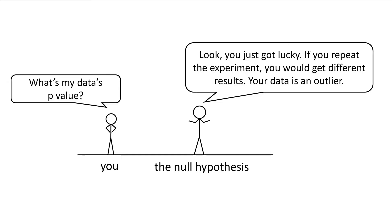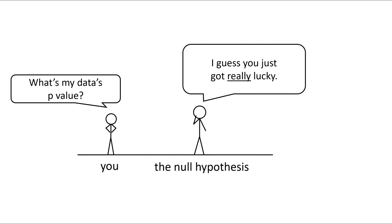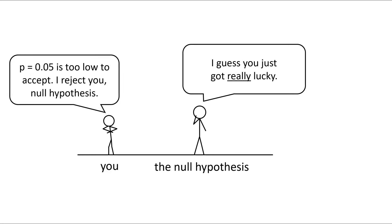And you say, what's my data's p-value? The null hypothesis gets out its calculator and says, I'm getting 0.05 or 5%. That means if you performed this experiment 20 times in a row, you'd only get that 4 inch difference one time. I guess you're just really lucky. And you reply, that's highly improbable. P equals 0.05 is too low to accept. I reject the null hypothesis.